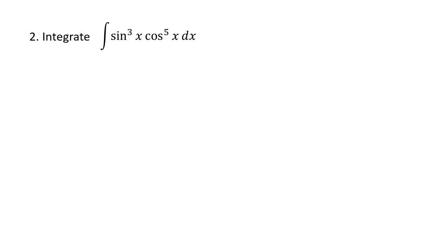For this next example, we have a power of sine times a power of cosine. What we want to look for are the exponents on those two trig functions. Both of the numbers are odd, which means we actually have a choice. We can split off one copy of sine and substitute u equals cosine, or split off one copy of cosine and substitute u equals sine. Probably the easier thing to do is go with the lower power.